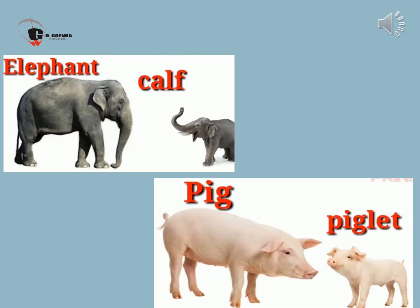Elephant — Calf. The baby of an elephant is calf. Do you know, students, that the elephant is the largest animal on land? An elephant calf weighs up to 200 pounds and is 3 feet tall when it is born. The next animal is pig — Piglet. The baby of a pig is piglet.